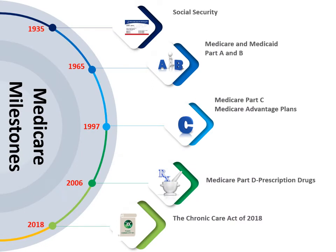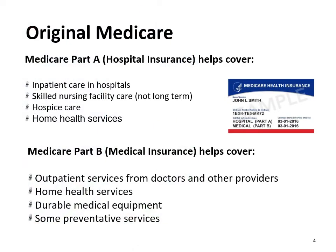Medicare has evolved since it went into effect in 1965, some 30 years after Social Security became law. In 1997, Medicare Part C — Medicare Advantage plans — was enacted as part of the Balanced Budget Act. In 2006, Medicare Part D prescription drugs was part of the Medicare Modernization Act of 2005. In 2018, Congress passed the Chronic Care Act, which addresses the care of chronic diseases.